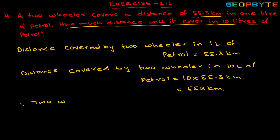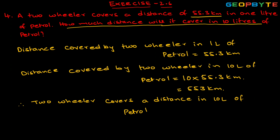Therefore, the two-wheeler covers a distance of 553 kilometers in 10 liters of petrol. If a two-wheeler covers 55.3 kilometers in one liter of petrol, then it covers 553 kilometers in 10 liters of petrol.